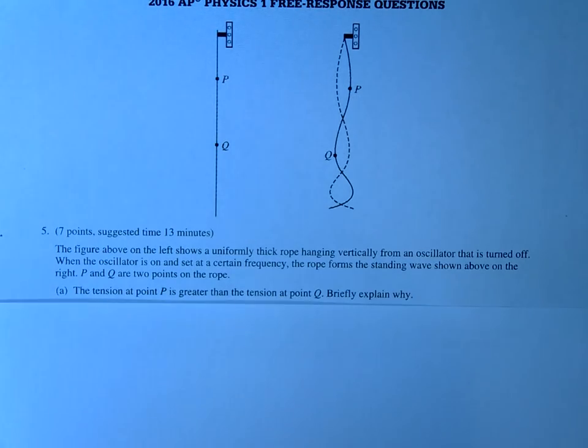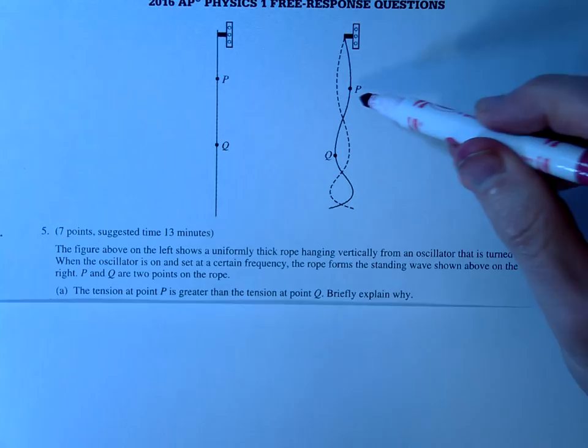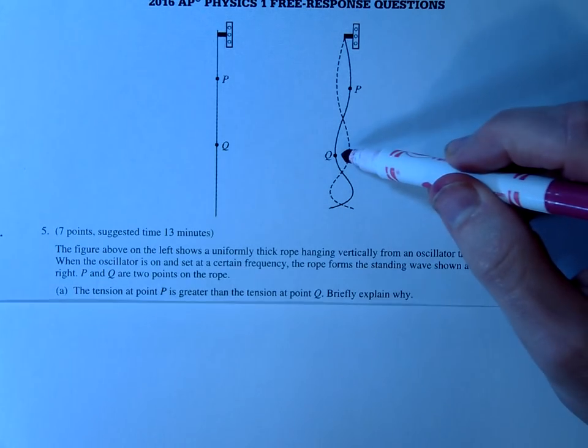This is the 2016 AP Physics 1 free response question number 5. So the first part of this question is asking why is the tension at point P greater than the tension at point Q?